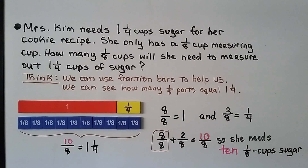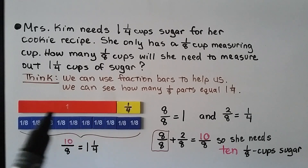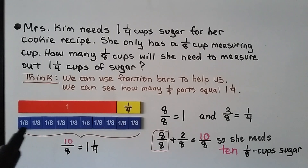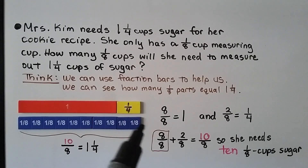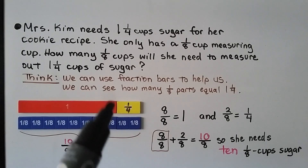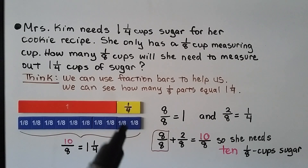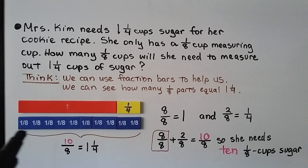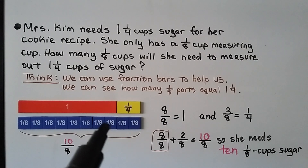Mrs. Kim needs one and one fourth cups of sugar for her cookie recipe, but she only has a one-eighth cup measuring cup. How many one-eighth cups will she need to measure out one and one fourth cups of sugar? We use fraction bars to see how many one-eighth parts equal one and one fourth. Eight one-eighth parts equal one whole, and one fourth equals two eighths, making ten eighths altogether — she needs ten of these one-eighth measuring cups.